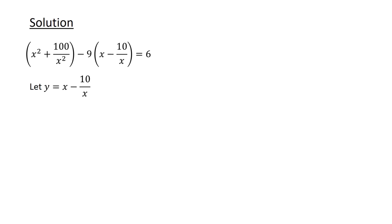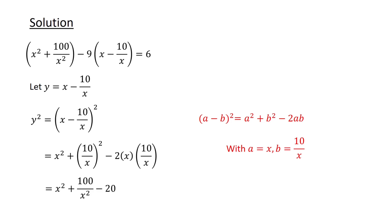Continuing, we make the substitution y equals x minus 10 over x. After that, we square both sides of the equation. To evaluate the right-hand side, we make use of the identity a minus b squared equals a squared plus b squared minus 2ab. For our case, a is x while b is 10 over x. So the right-hand side becomes x squared plus 100 over x squared minus 20. Moving 20 over to the other side, we get x squared plus 100 over x squared equals y squared plus 20.